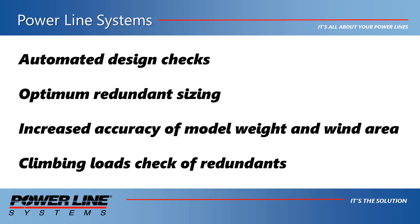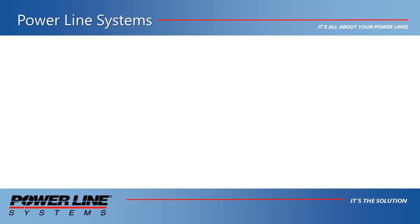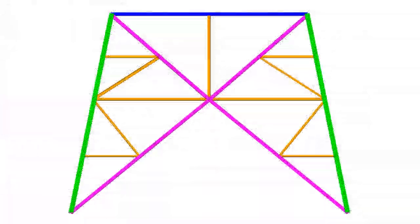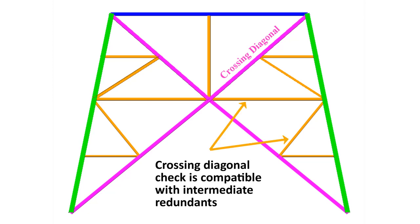In addition, there have been several significant advancements in Tower over the years to make the program more redundant-friendly. Beginning with version 15.50 of Tower, the crossing and corner diagonal design check routines will work when redundants are connected to the diagonals. This was not possible in prior versions, and it was a common reason users cited for excluding redundants from their models. However, this is not the case anymore.